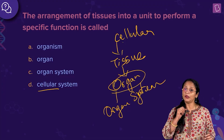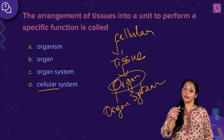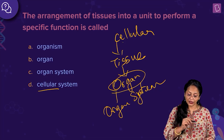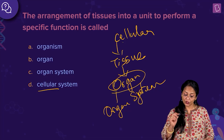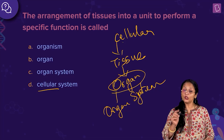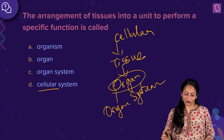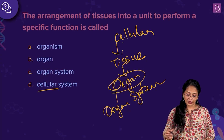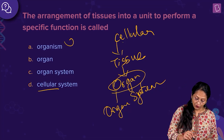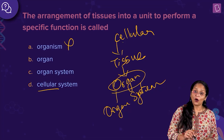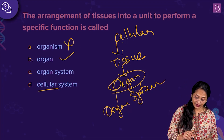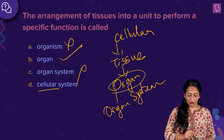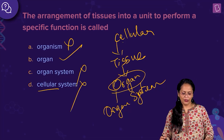So you can see how it goes from cellular to tissue, organ, to organ system. The question asks: the arrangement of tissues into a unit to perform a specific function — what is it called? Is it the organism? No. Is it organ? Yes, it is an organ. Is it organ system? Definitely no. Is it cellular system? No.